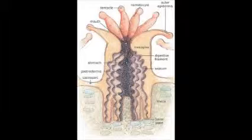As the coral grows and expands, reefs take on three major characteristic structures: fringing, barrier, or atoll. These are the different types of reefs.